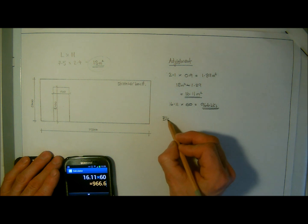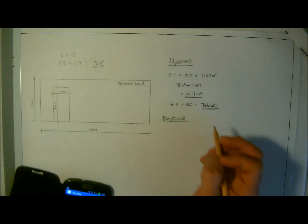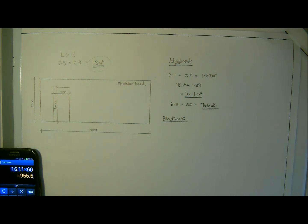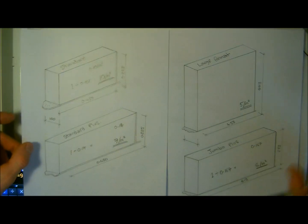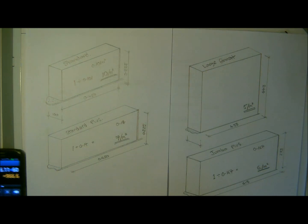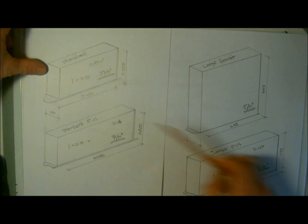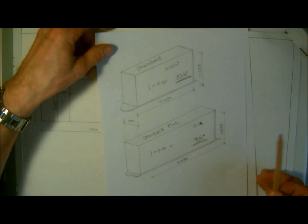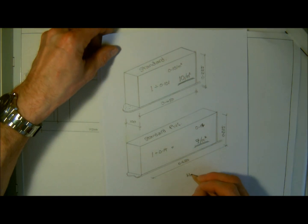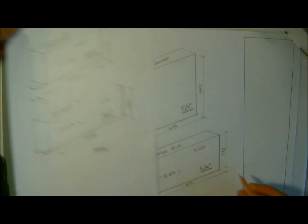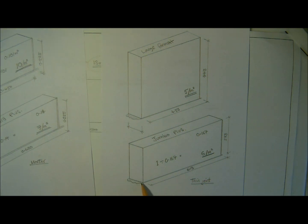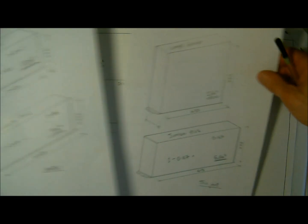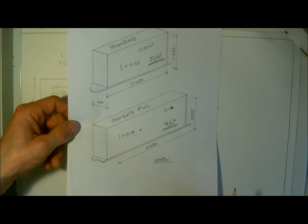To work out the block work, we need to determine which block we're going to use. The ones that I tend to use - we're going to say we're using a traditional mortar, not a thin joint. These ones are normally laid in mortar. The large format and jumbo plus are specifically for thin joint blockwork with a three mill joint and special adhesive, whereas these will have mortar, just the same as brickwork does.